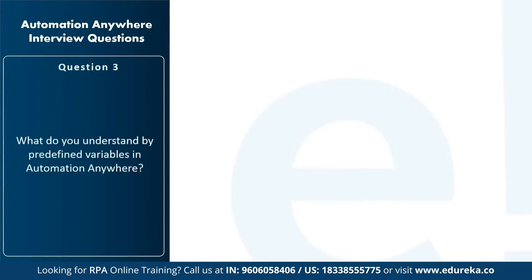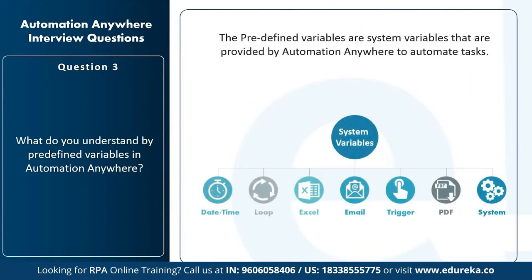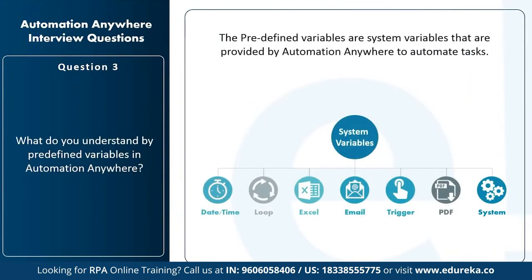The next question is: what do you understand by predefined variables in Automation Anywhere? Predefined variables are system variables provided by Automation Anywhere to automate tasks. The different predefined variables include: date and time, loop, Excel, email, trigger, PDF, and system. To check the predefined variables, go to the variable manager on the right side of the task pane, click on 'show system variables,' and it will display all the system variables.